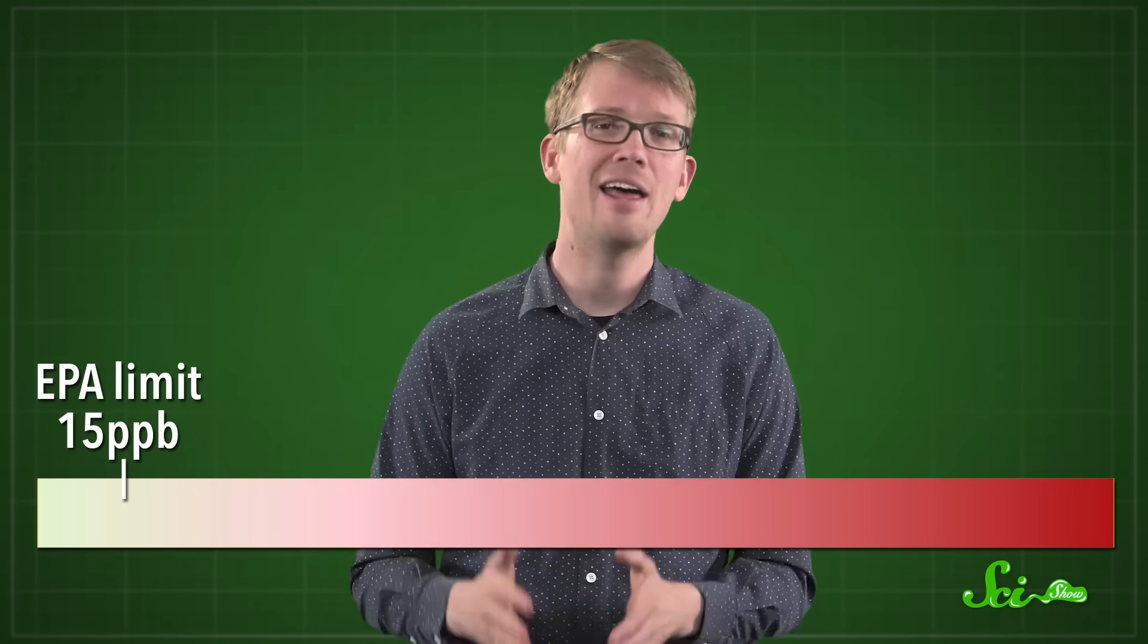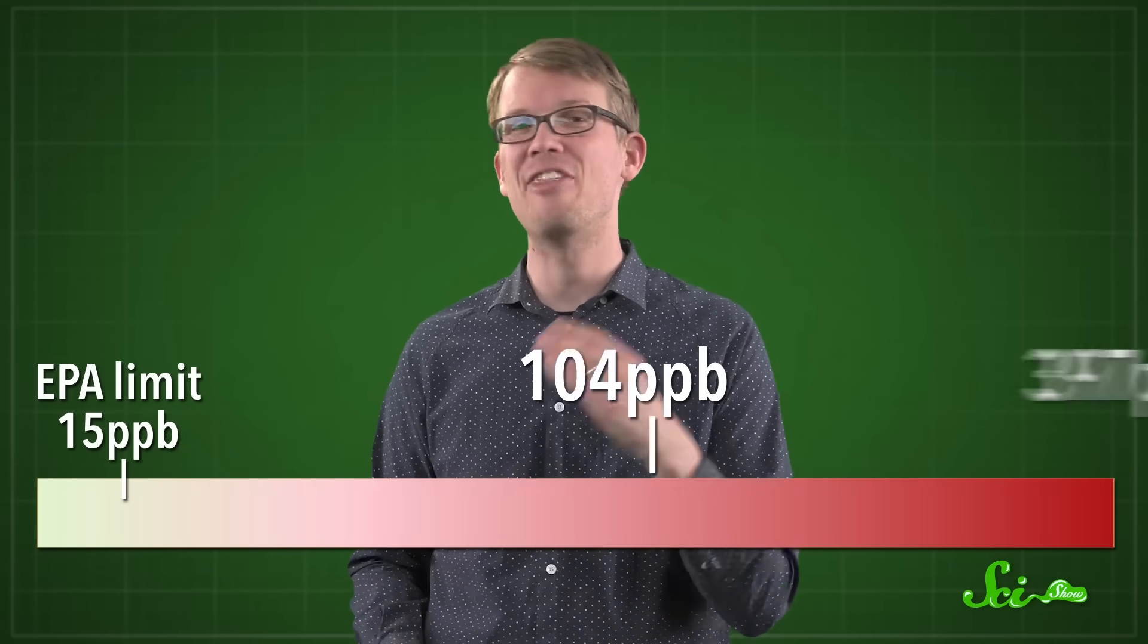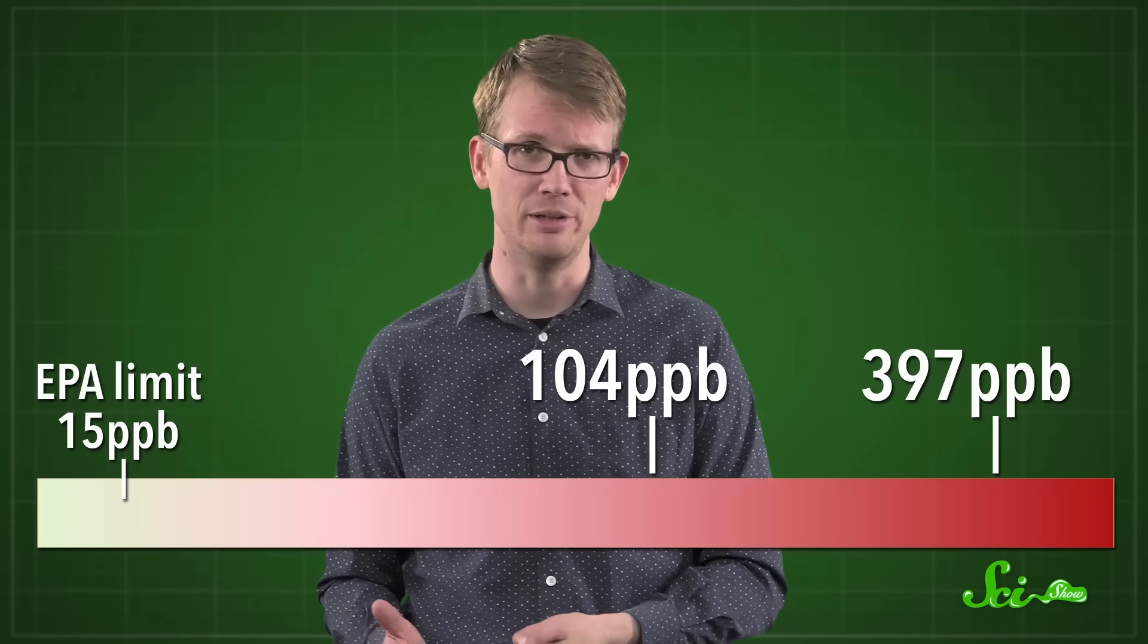Even still, when the city of Flint tested one resident's water in February and March of 2015, they found lead levels at 104 parts per billion and 397 parts per billion, far above the EPA's action level.